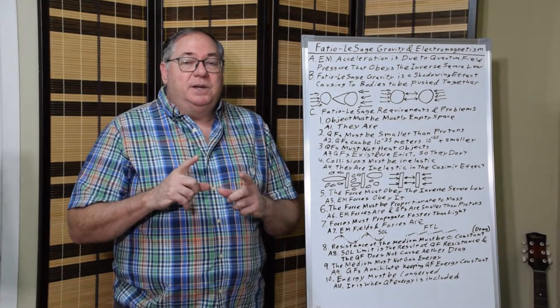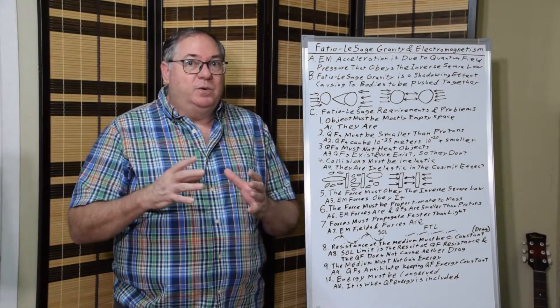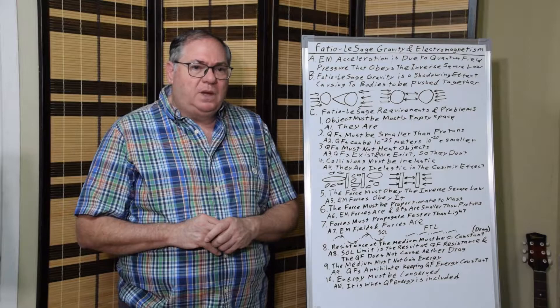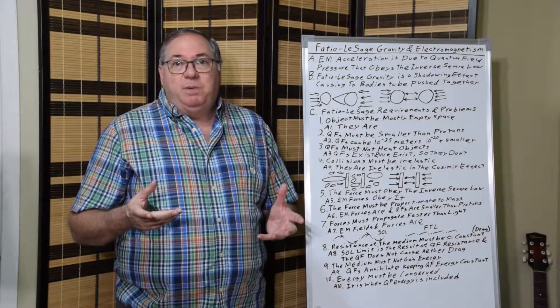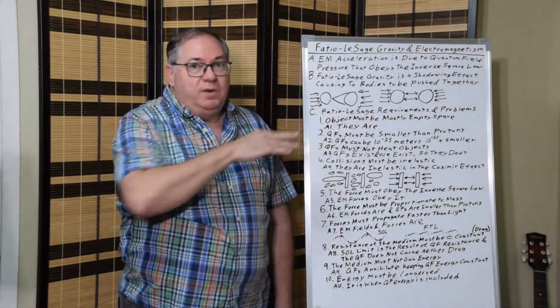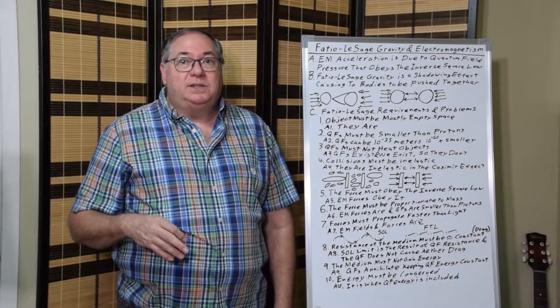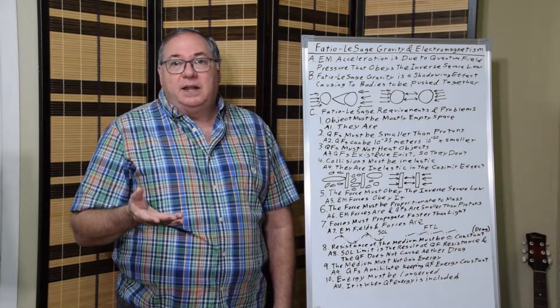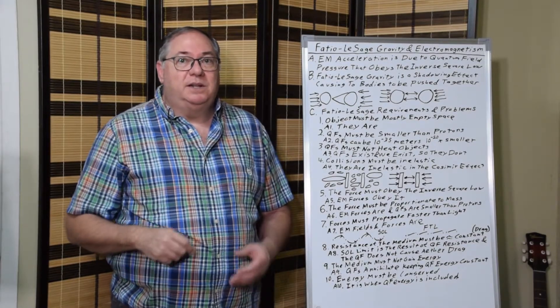So there's some type of repulsion at a close range that overcomes the Coulomb attraction and prevents them from falling together. But that means an electron-positron and a proton-antiproton pair always repel each other regardless of their orientation. And that produces a pressure force that obeys the inverse square law. The next one is that it must be proportional to mass. And here's a case where we know from the electric forces that they're proportional to mass.